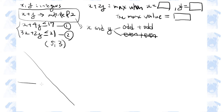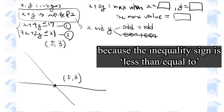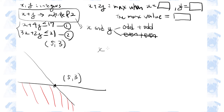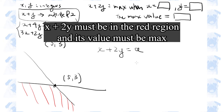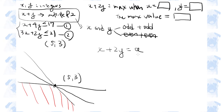The region that satisfies both conditions is identified on the graph. We assume that x plus 2y equals some constant a, and that the graph of this equation goes through the point (5, 3). Substituting these values gives a equals 11. Since 5 and 3 are both odd numbers satisfying the required condition, x plus 2y is maximum when x is 5 and y is 3, and the maximum value is 11.